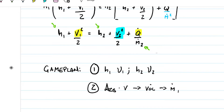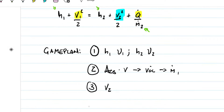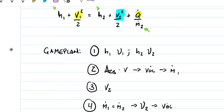Once I have the mass flow rate, I'll be good to go and calculate velocity two — the velocity at the outlet. Next up is the volumetric flow rate at the outlet. For that, I'll use the fact that mass flow rate one and two are the same, combined with specific volume two, to calculate the volumetric flow rate at the outlet.